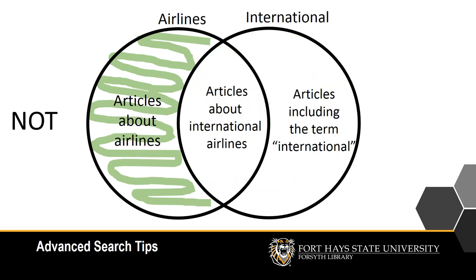When you use NOT to connect your search keywords, the database or catalog will provide all the results that include the first keyword, except for those that also include the second keyword. NOT is useful for excluding results that you don't want.